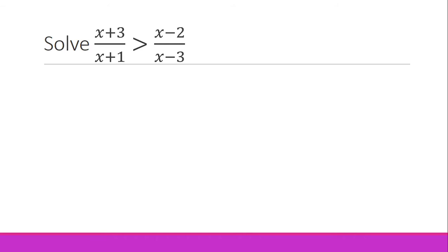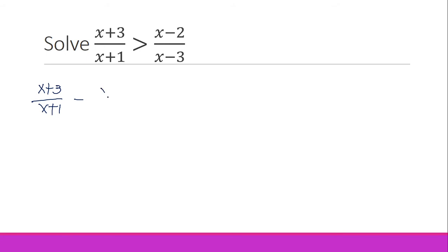The concept is the same: all you have to do is make sure the right side is set to zero and the left side is a single term. So we are going to transfer all the expressions from the right side to the left side. That means we move (x minus 2) over (x minus 3) to the left, giving us (x plus 3) over (x plus 1) minus (x minus 2) over (x minus 3), which is greater than zero.